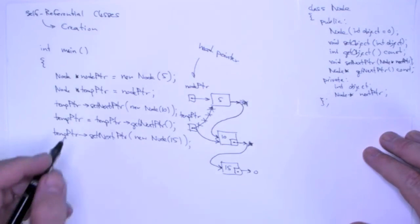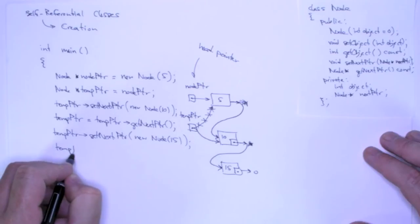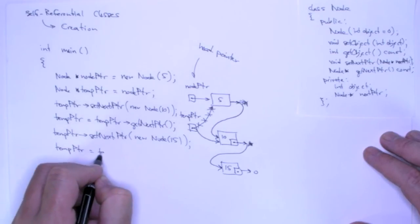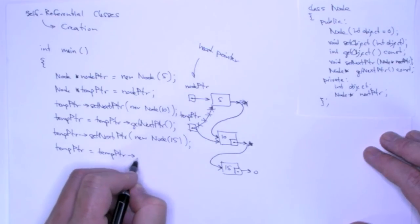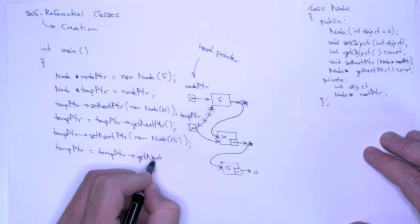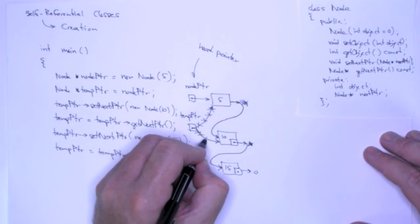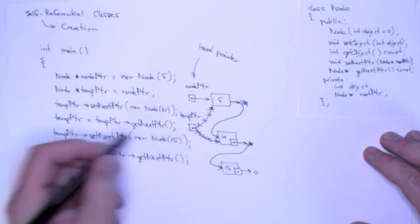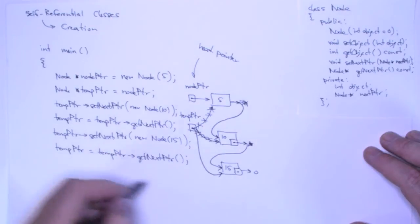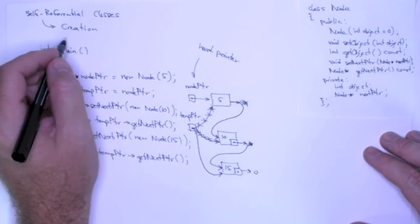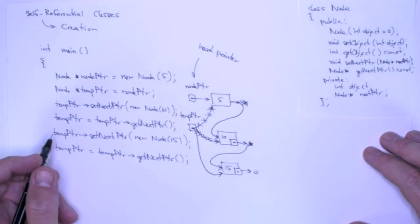And just to finish things off, I'm going to advance temp pointer again. So that we maintain this property during creation, or construction of the list, that temp pointer always points to the last element of the list.